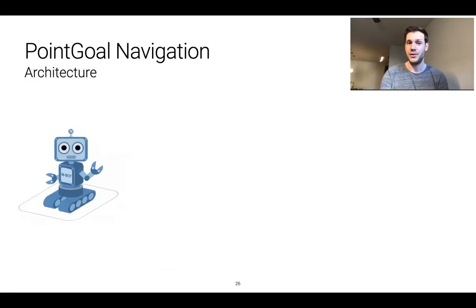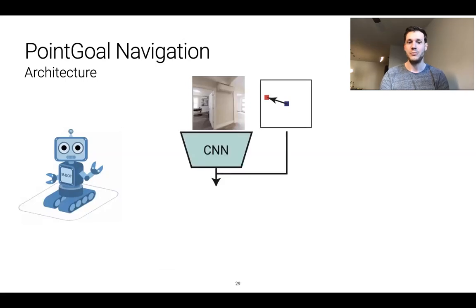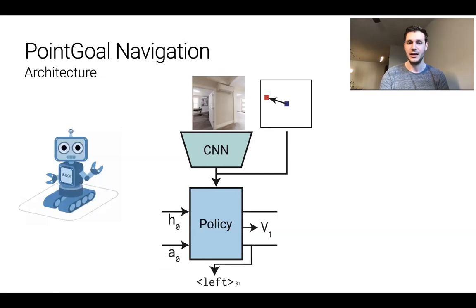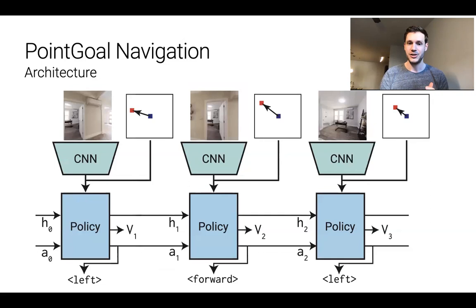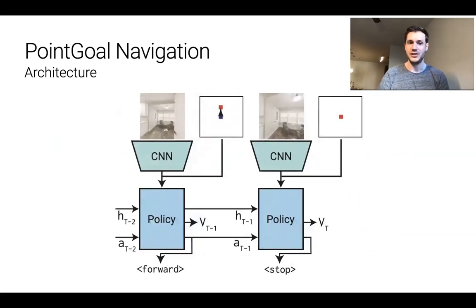The agent is controlled with a deep neural network that has the following general architecture. We take the observations at each time step. The visual observations are then processed with a CNN and this embedding, the output of the CNN, is concatenated with the updated position of the goal. This is then given to a policy parameterized by some type of recurrent neural network which is then used to predict the action to take. This process then continues on over time taking actions, receiving observations, processing them and then giving it to the policy until the agent finally reaches the goal and predicts stop.